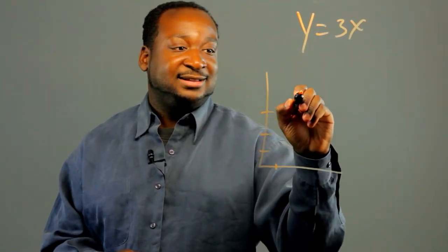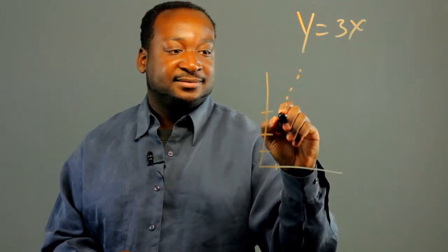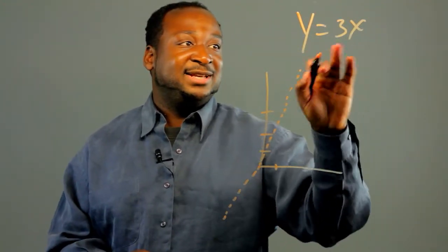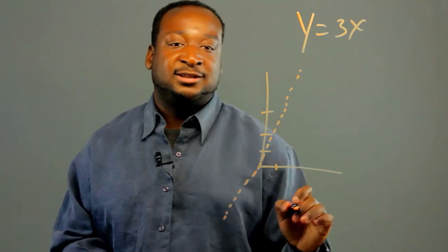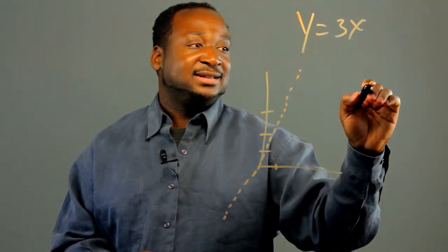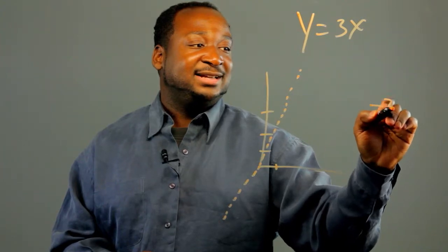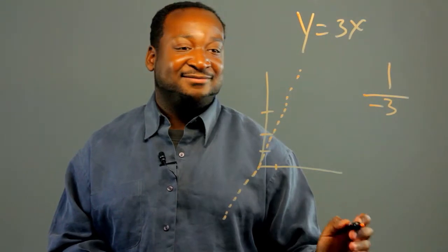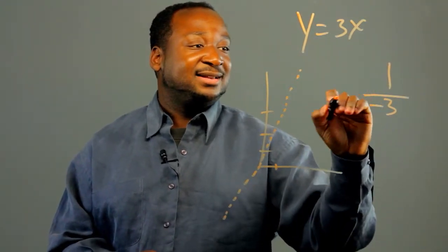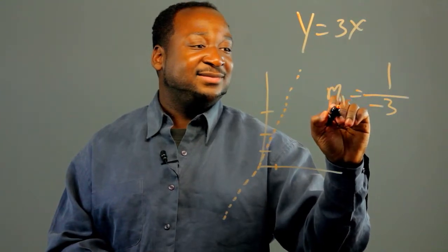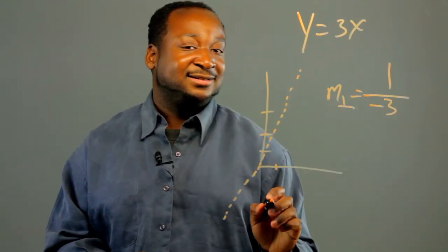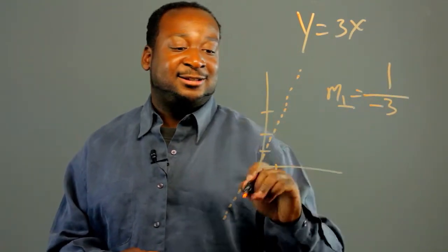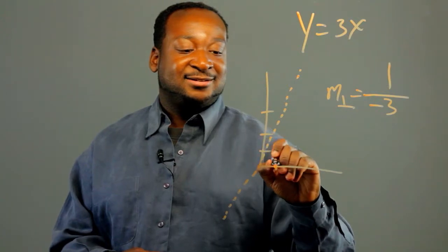That'll look like this. Now the opposite reciprocal — 3x being the slope, so 3 is the slope. If we take the opposite, negative 3, and take its reciprocal, so that's 1 over negative 3. Now this new slope here, I'll call this m sub perpendicular. This new slope gives me the slope that's perpendicular to this line.